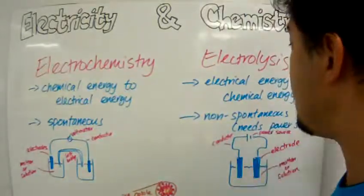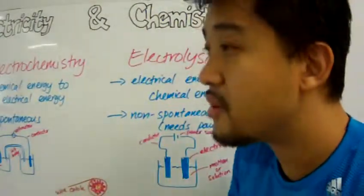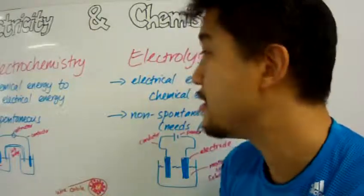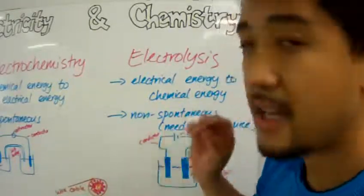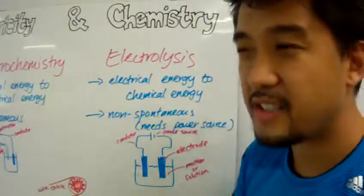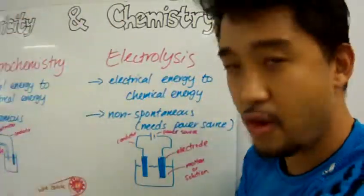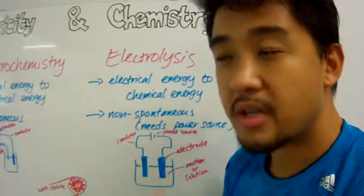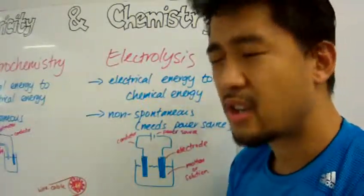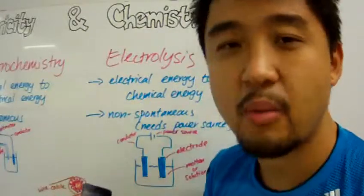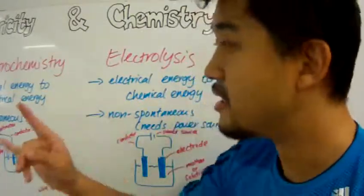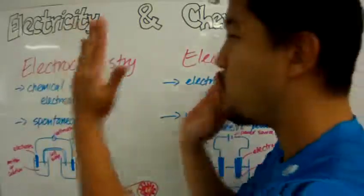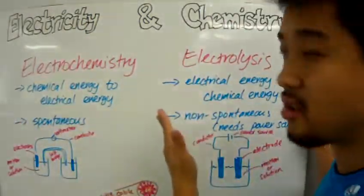And when manufacturing industry receives this electricity, they use it for all kinds of chemical reactions that are non-spontaneous through a process called electrolysis. Electrolysis is basically taking this electrical energy from power plants and using it to force a chemical reaction to take place. The products of the chemical reactions are collected, sold, and packaged. So that's electricity and chemistry. The two major differences are that one is called electrochemistry and the other is called electrolysis.